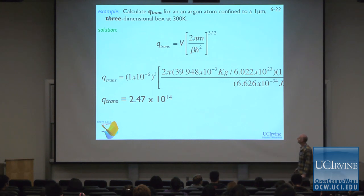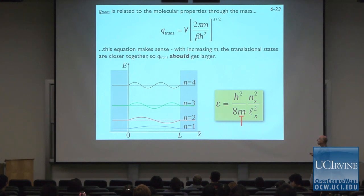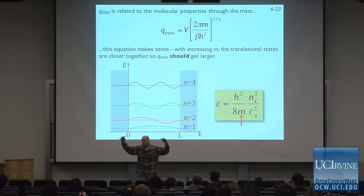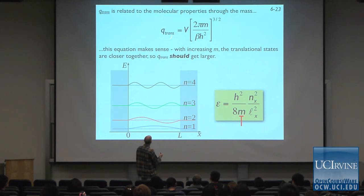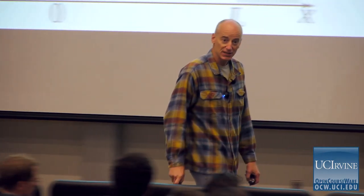This equation makes sense: with increasing mass, translational states are closer together. Mass M is in the denominator of the energy expression, so the translational partition function increases with M — in proportion to the 3/2 power. If there's a given amount of thermal energy, there will be more accessible translational states for a heavier molecule. The same is true of volume: V is directly proportional to the partition function, which also makes intuitive sense.